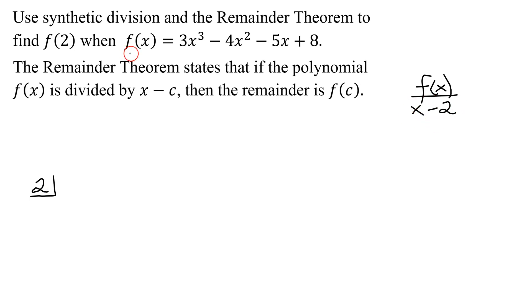Next, we need to check f(x) for missing terms. I have an x³, x², x, and a constant. There are no missing terms, so I'm ready to write f(x) here. But remember, we don't write the x's. We just strip off the coefficients and use the constant term.